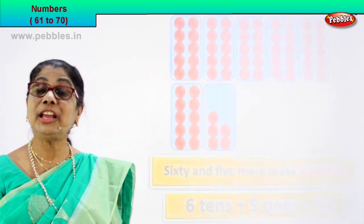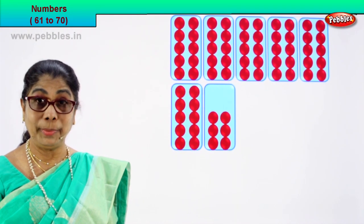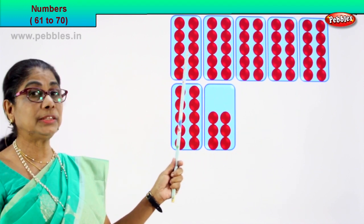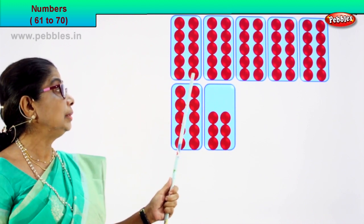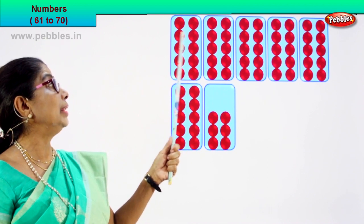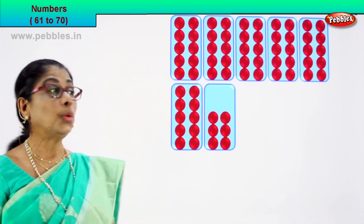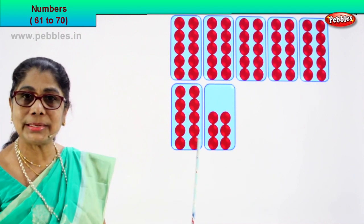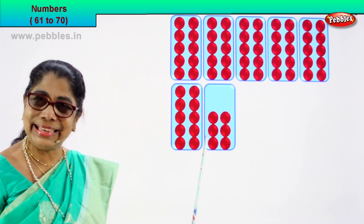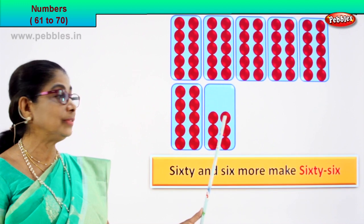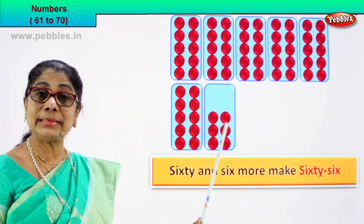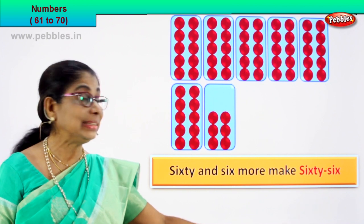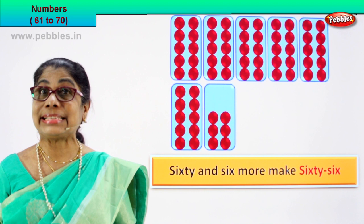Shall we go to our next number? We are learning to count. You count with me. Let's count the number of boxes. One, two, three, four, five, six. Box of ten each. Let's count this first box. One, two, three, four, five, six, seven, eight, nine, ten. There are ten in each box. One ten, two tens, three tens, four tens, five tens, six tens. Sixty and six more. Six tens and six more. Sixty and six more make sixty-six.